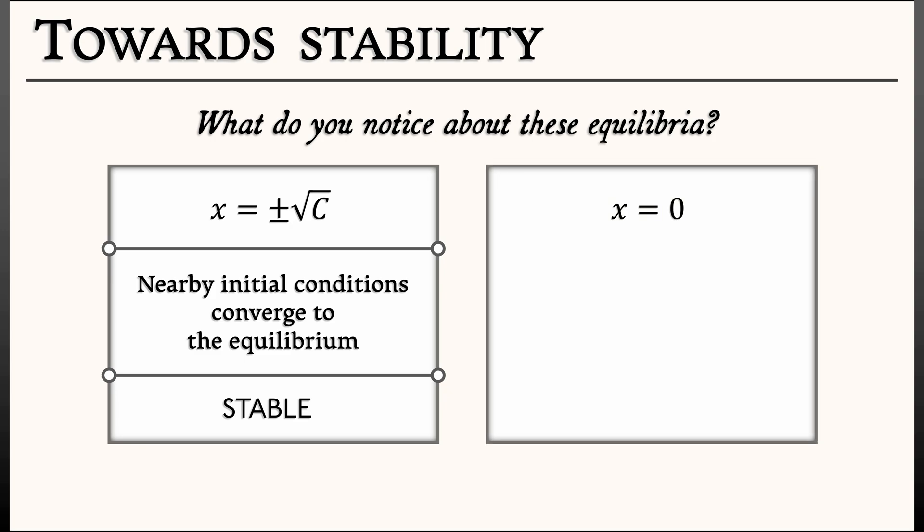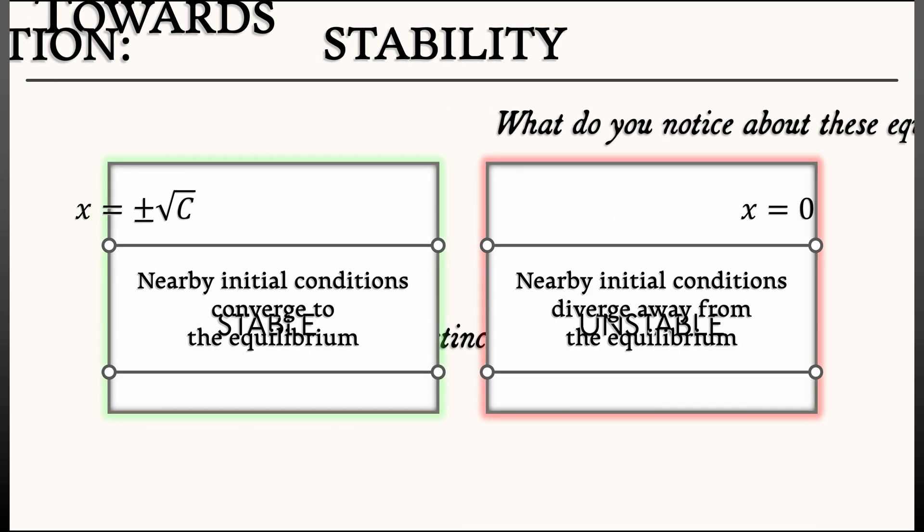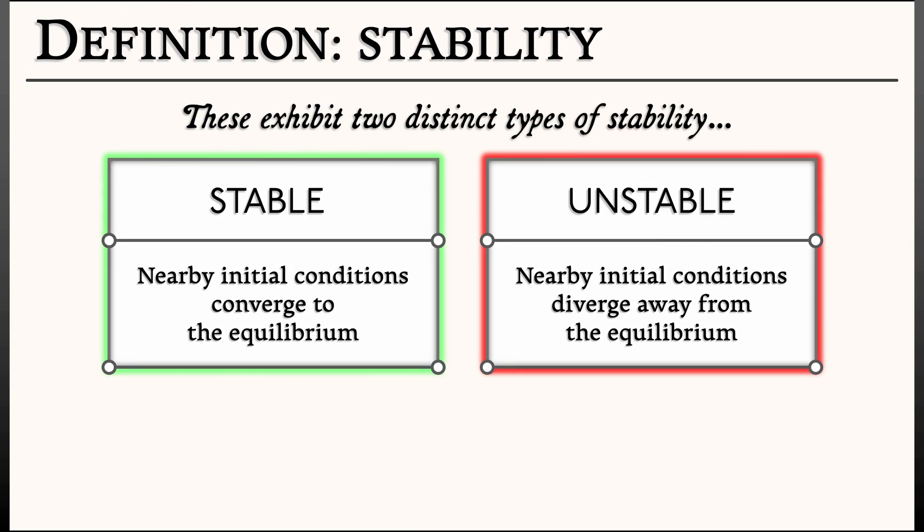On the other hand, at x equals zero, that's an equilibrium. If you start there, you stay there. But if you perturb away from it, however slightly, you very rapidly rush away from it. You diverge away from that equilibrium long term. Such an equilibrium is called an unstable equilibrium. And this dichotomy between stable and unstable is going to animate the rest of this volume.